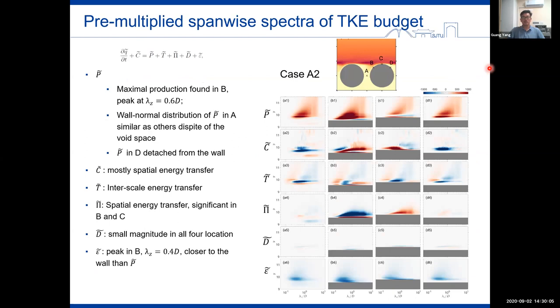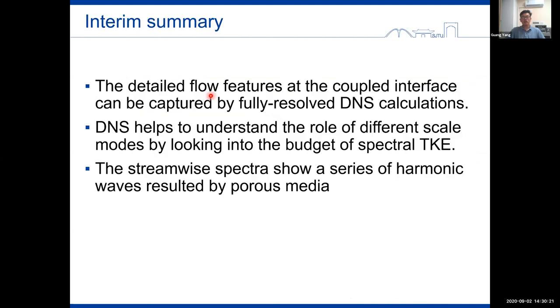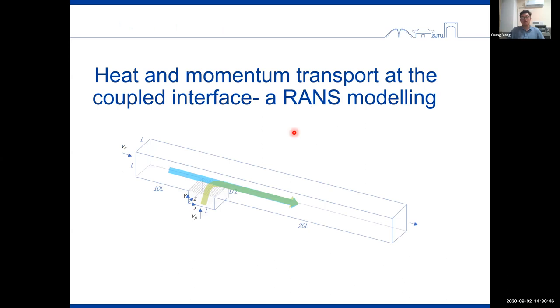The pre-multiplied spanwise spectra of TKE budget is also analyzed to understand the turbulence transport. Here I am not going into the details due to the limited time. And to make an interim summary by performing DNS, we captured the fundamental physics of turbulence at the coupled interface. And DNS also helps to understand the role of different scale modes by looking into the TKE budget. Well, if one is interested only in the time averaged flow behaviors, a much cheaper RANS modeling for turbulence is also sufficient. Then let me introduce the study of the coupled process using a RANS model, also focused on the pore scale.